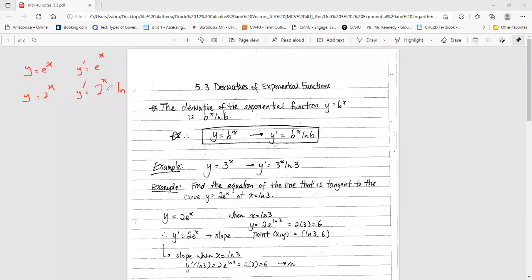by the ln of the base. Here the ln of e is 1, that's why you don't see that there. But the general formula for y equal to b to the power of x is y prime is b to the power x times ln of the base. Example: y equals 3 to the power x, then y prime is 3 to the power x times ln of 3.